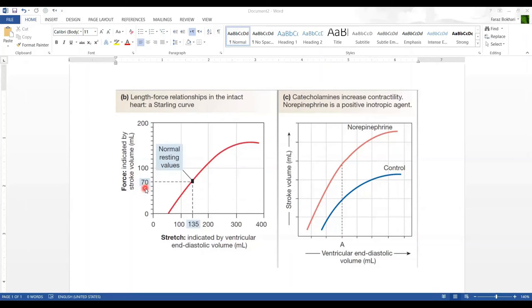He has highlighted the normal values. Stroke volume is 70 ml per beat, and it corresponds to 135 ml of EDV (end diastolic volume). You may have read 120 or 130 - this normal variation between textbooks is from Silverthorn, another very good book.